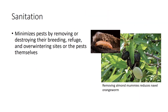Sanitation is an important management tool that is applicable in nearly every habitat and for most kinds of pests. Good sanitation practices minimize pests by removing or destroying their breeding, refuge, and overwintering sites or the pest species themselves. For instance, some plant pathogens cannot survive without a plant host. Removal of all residues from previous crops can limit future infestations. Some sanitation practices are effective enough that they eliminate the need for pesticide applications. For example, removal and destruction of mummy nuts from almond trees eliminates the overwintering sites of the navel orangeworm.